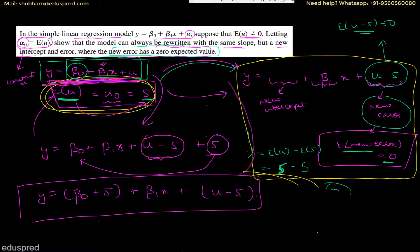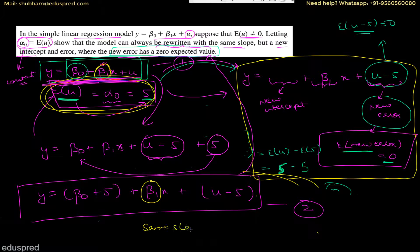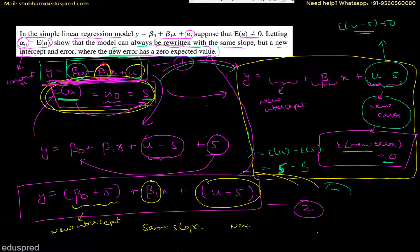Now take a look at this equation. We have rewritten the original model with the same slope — beta one in both equations. But we have a new intercept: originally it was beta zero, now it is beta zero plus five. And we have a new error: originally it was u, now it is u minus five. The expected value of this new error, u minus five, is equal to zero. That's what we wanted to do.